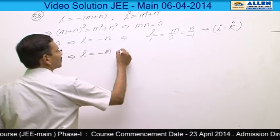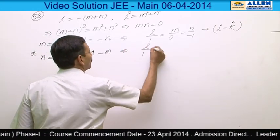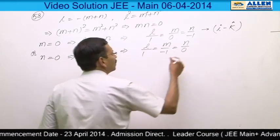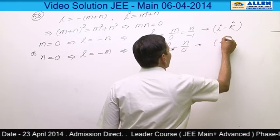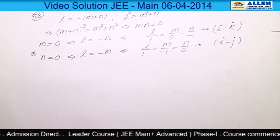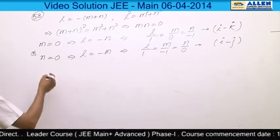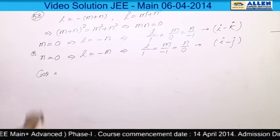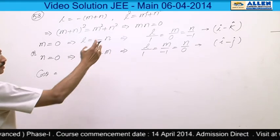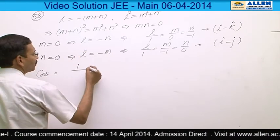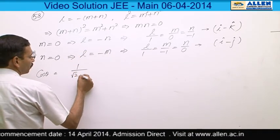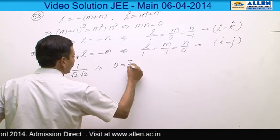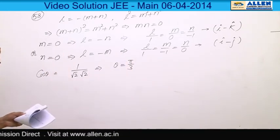The second line gives direction ratios l/1 = m/−1 = n/0, meaning it is parallel to î − ĵ. Taking the dot product of the two direction vectors: î · î = 1, giving cos θ = 1/(√2 × √2) = 1/2, so θ = π/3. The correct option is 1.